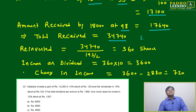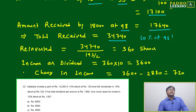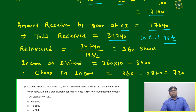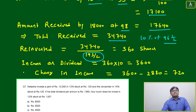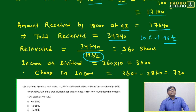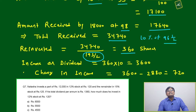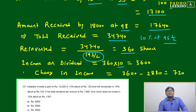She invests the total amount of 34,740 in 10% stock at 96.5. Dividing 34,740 by 96.5 — which can be written as 193/2 — she gets 360 shares.